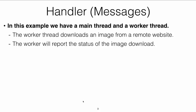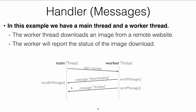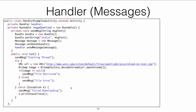In this example, there is a worker thread that downloads an image from a remote website, and the worker reports the status of the download. The main thread starts the worker, the worker sends a message telling the main thread it has started downloading — that calls handleMessage — and then sends another message when it has finished. A very simple example.